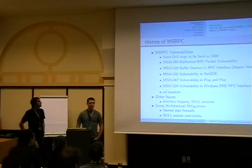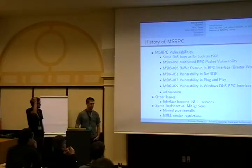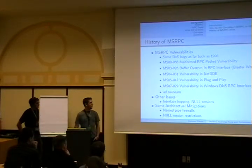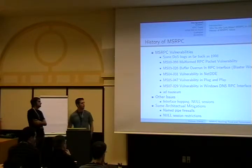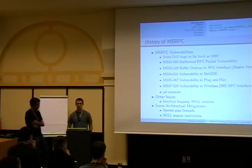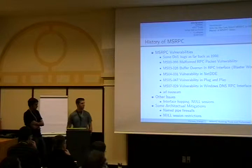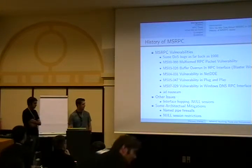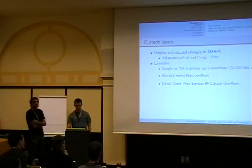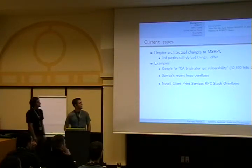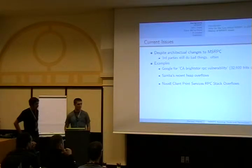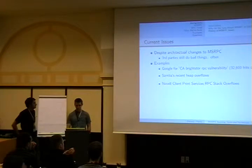A brief history of bugs in RPC: MSRPC bugs go back as far as 1998 with denial-of-service vulnerabilities, all the way to vulnerabilities still being released today. You can see MS03-026, which resulted in the Blaster worm. Other issues MSRPC has had include interface hopping and null sessions — interface hopping is an architectural flaw where you can reach specific services if there are any open endpoints. Microsoft has created architectural mitigations such as named pipe firewalls and null session restrictions. But despite those changes, third parties can still do extremely bad things in their implementations, almost as if they believe nobody can communicate with their services.